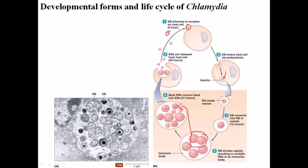During the conversion of elementary bodies into reticulate bodies, some reticulate bodies cannot be converted back into elementary bodies. Instead, they are placed into storage vesicles. These stored vesicles are called latent bodies or latent inclusion bodies, and they stay inside the host cell for a long period of time. When they reach a favorable environment, they start producing elementary bodies again and release them outside the cell.